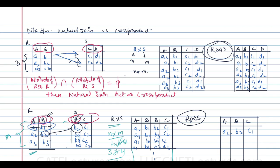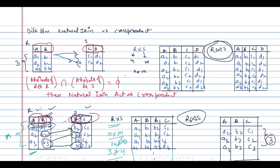Next, B3 appears in R and also appears twice in S (B3 C2 and B3 C3), so we combine those rows to get A3 B3 C2 and A3 B3 C3. This means we only get three tuples total. So: if R and S have no common attribute, natural join acts as cross product; if their attribute intersection is not phi, we take non-common attributes plus the shared attribute once, and combine only tuples where the shared attribute values match.